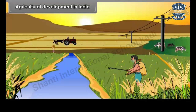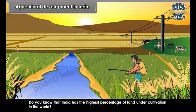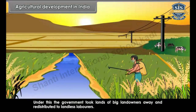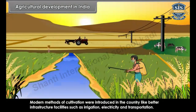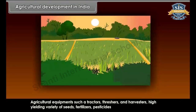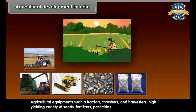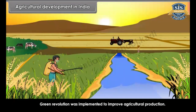India has the highest percentage of land under cultivation in the world. Land reforms were introduced by the government to improve agriculture; the government took lands of big landowners away and redistributed them to landless laborers. Modern methods of cultivation were introduced, including better infrastructure such as irrigation, electricity and transportation. Agricultural equipment such as tractors, threshers and harvesters, high yielding variety of seeds, fertilizers, pesticides and electricity were made available to farmers at less than the actual price. Green revolution was implemented to improve agricultural production.